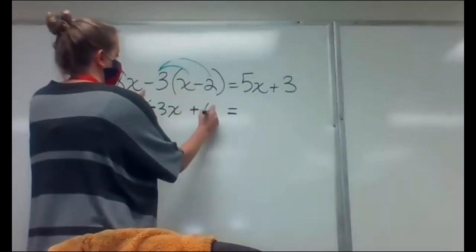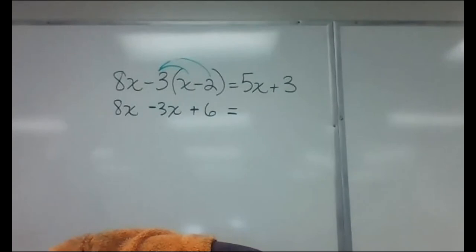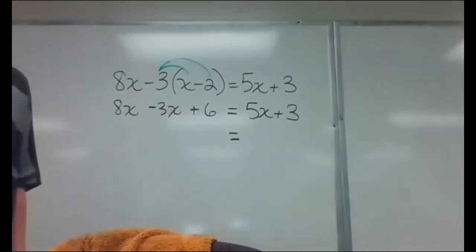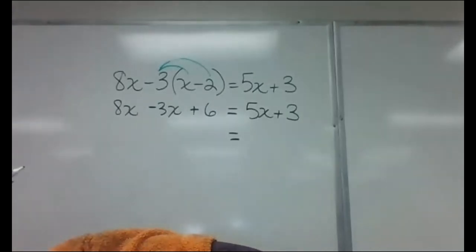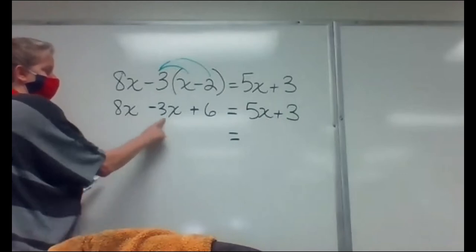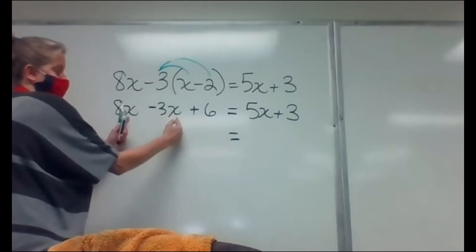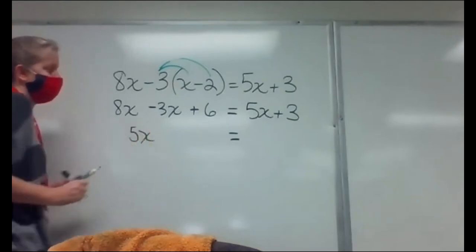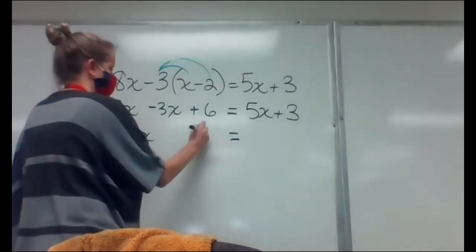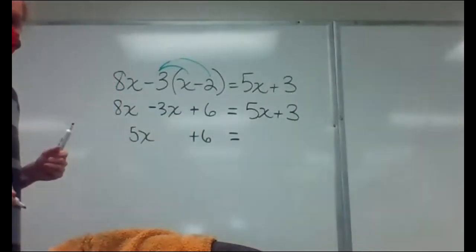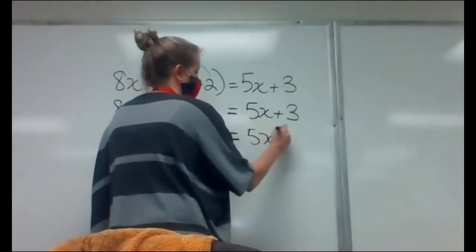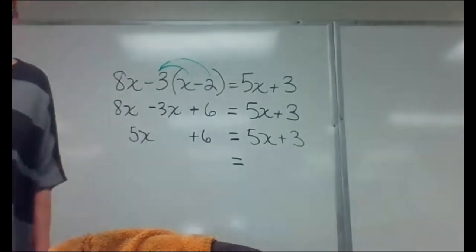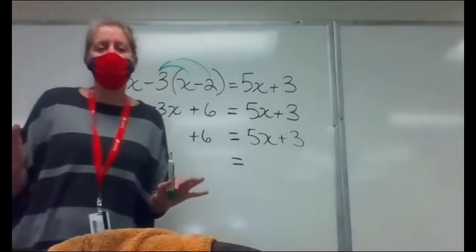Drop the right side down. Now look at either side — can I clean up? On the left side I can put the x's in the same basket. They're on the same side of the equal sign: 8x minus 3x is 5x. Drop down my plus 6. Nothing to combine over here, so I still have 5x plus 3 on the right side.